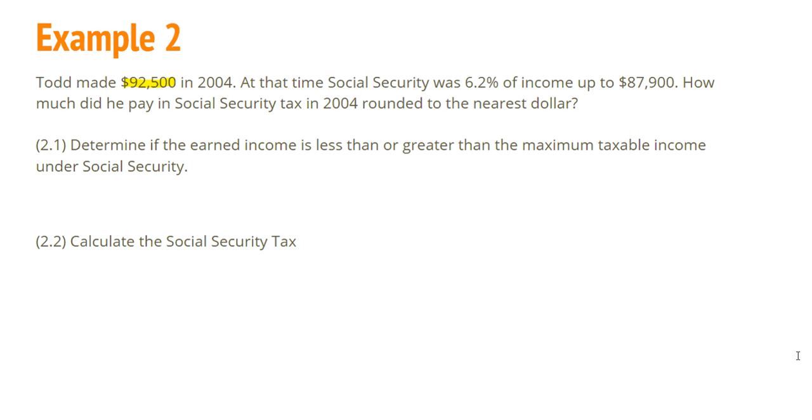So our first step is to determine if the earned income is less than or greater than the maximum taxable income under Social Security that year. The earned income is $92,500 and the maximum income is $87,900. So we're going to compare the earned income to the maximum income.